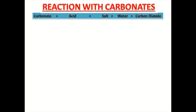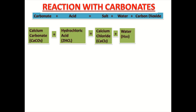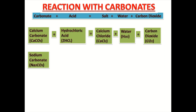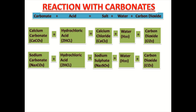Let us see its example. Here, calcium carbonate is a carbonate, and when it is added with hydrochloric acid, it gives salt, i.e. calcium chloride, CaCl2, and water, and carbon dioxide gas. So we can conclude that dilute acids react with carbonates to form salt and carbon dioxide.